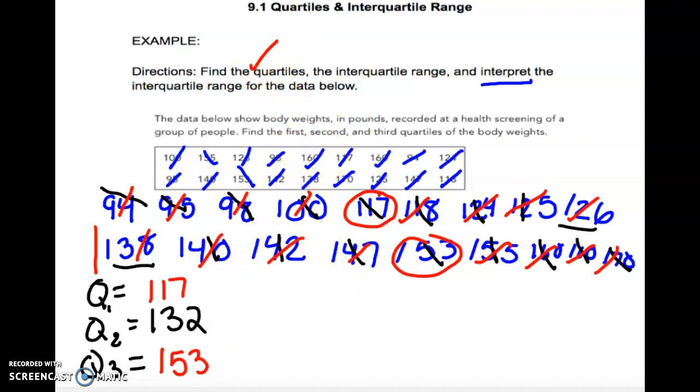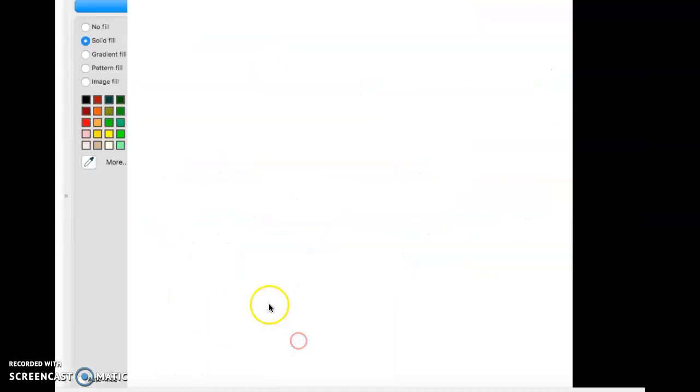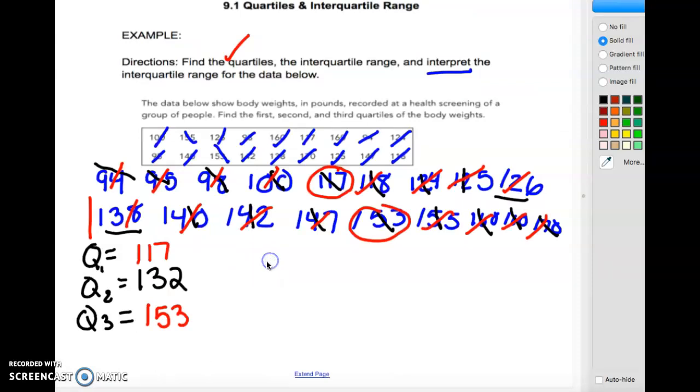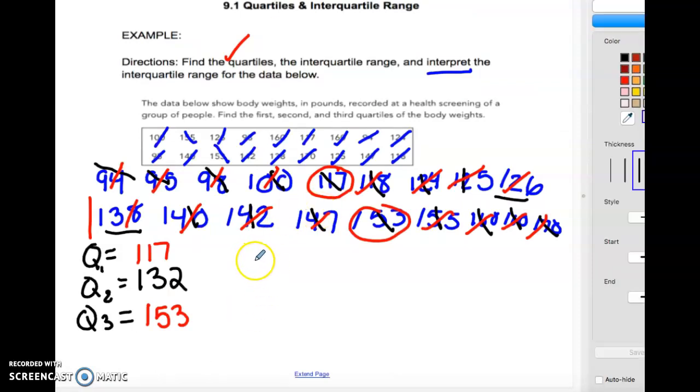Now we need to find the interquartile range. To find the interquartile range, remember we are going to do Q3 minus Q1. So that's 153 minus 117, and you get 36. So the interquartile range is 36. Okay, check that off. And then we need to interpret the data.